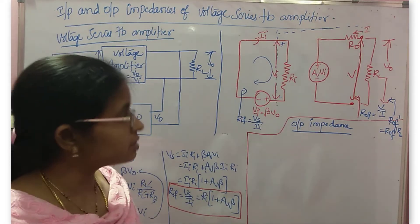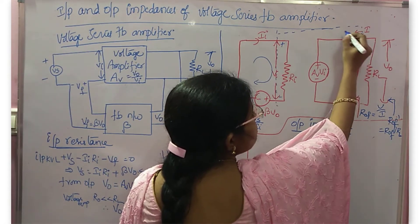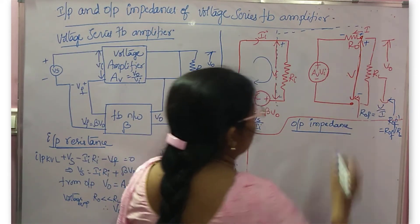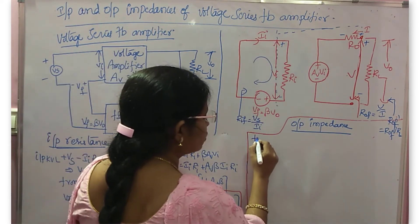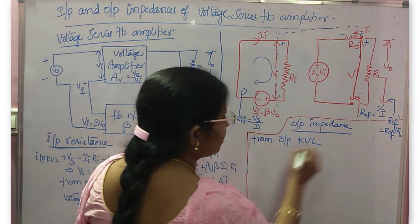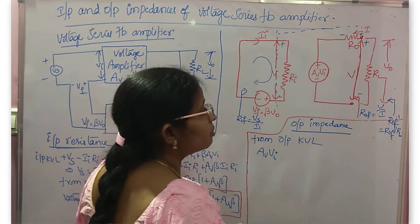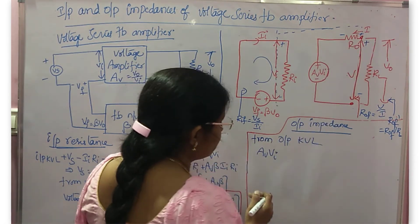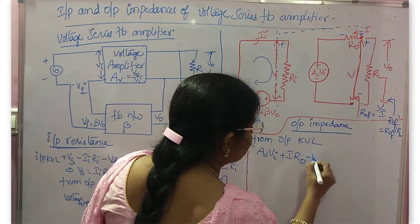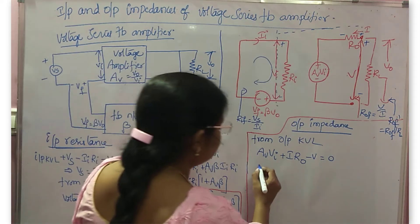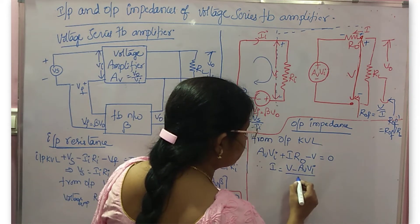To find the output impedance, write KVL in the output circuit. Starting from the second point: Av·Vi, with plus polarity, so plus I·R0, then minus V equals 0. Therefore I equals (V minus Av·Vi) divided by R0.